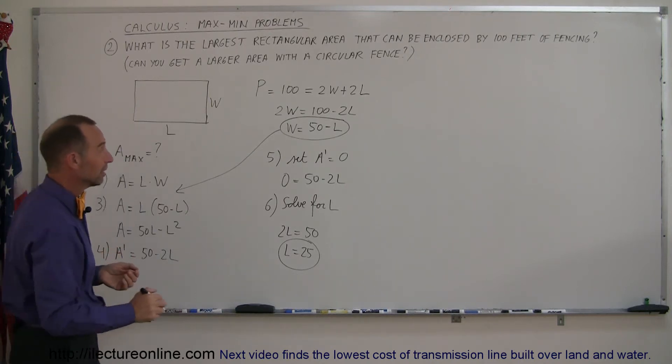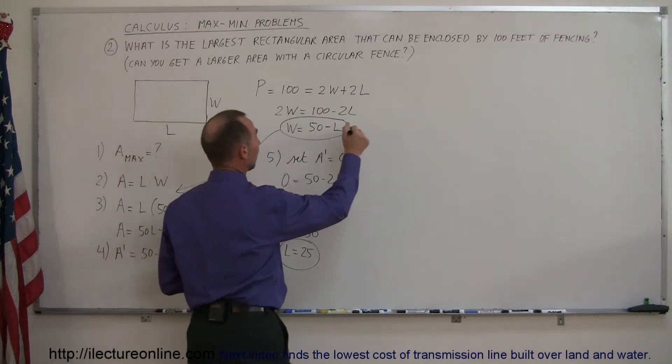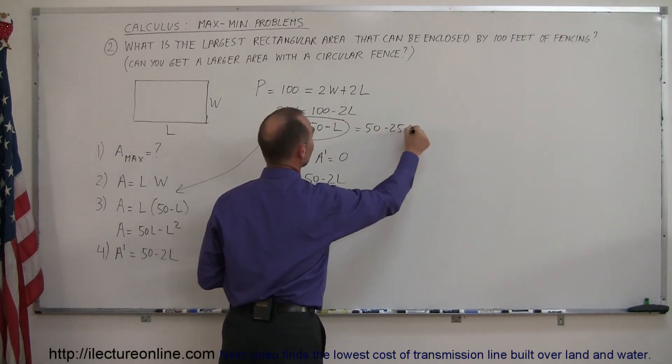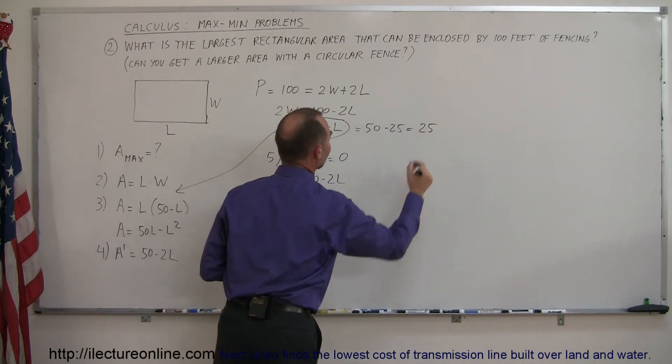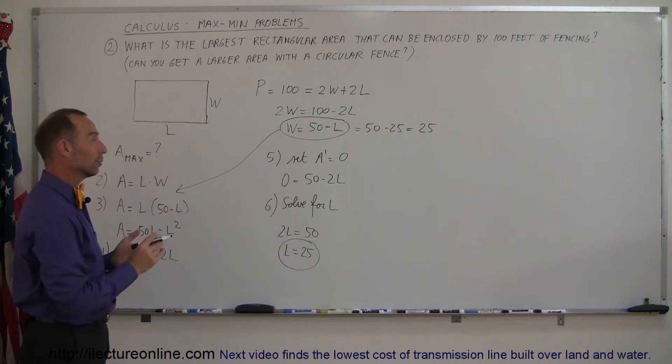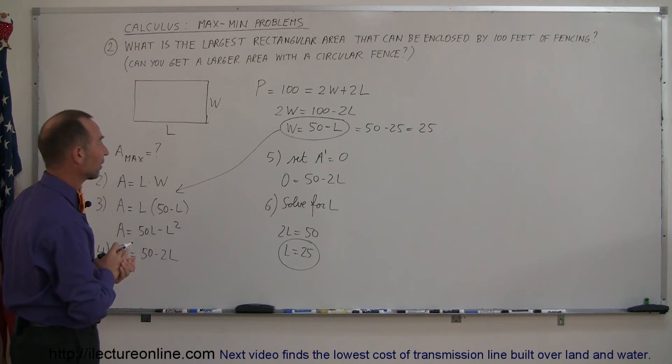Now if the length is 25 feet, then we go back over here. The width is equal to 50 minus the length, which is 25, which means the width also has to be 25 feet, which means that we end up with a square, not just a rectangular, but a square area that's being fenced off.